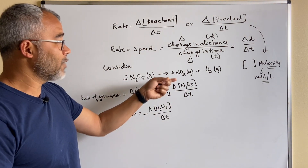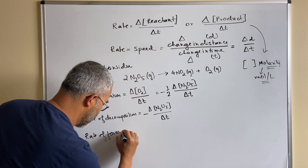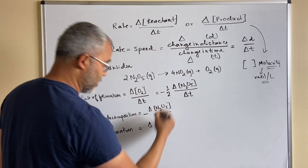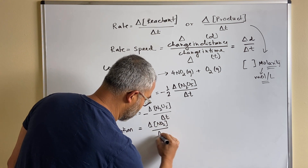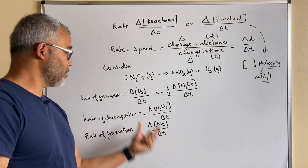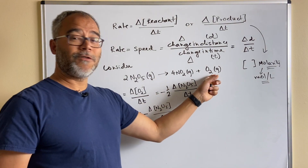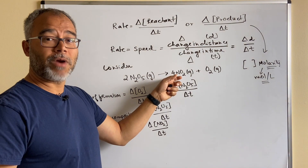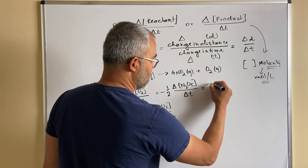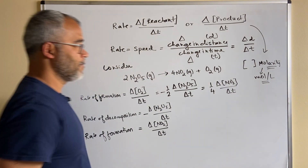Now let's understand the rate of formation of NO₂. Since NO₂ is a product, we don't need a negative sign, so the rate of formation of NO₂ equals ΔNO₂/Δt. For every one molecule of oxygen formed, four molecules of NO₂ are formed. So the rate of formation of oxygen is one-fourth that of the rate of formation of NO₂.